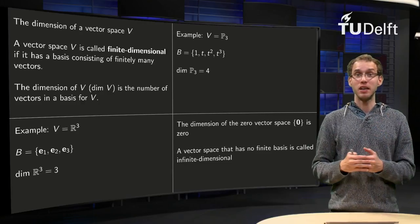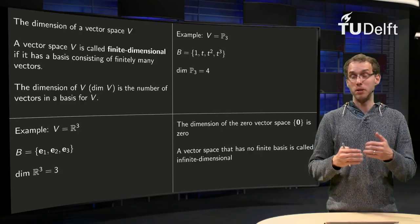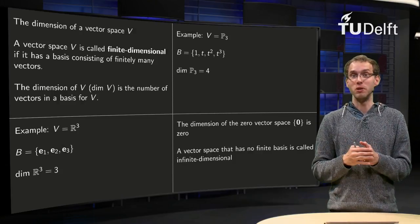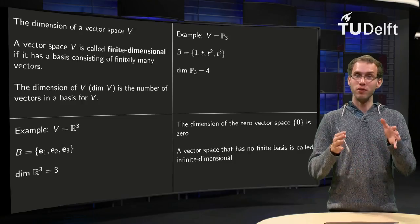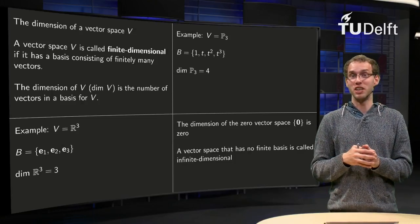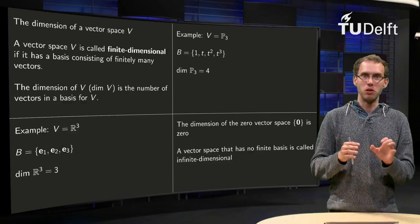We can take a look at the dimension of the zero vector space, which contains only the zero vector. It does not have a basis, but we will define this dimension as zero. That is not so interesting.